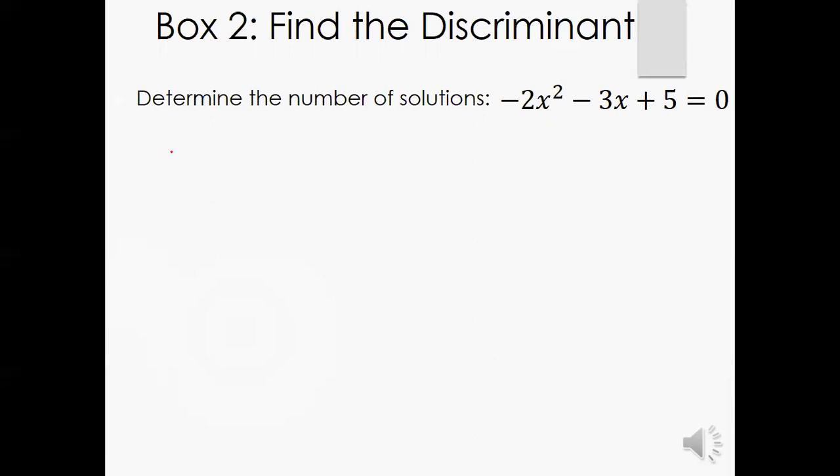And remember your discriminant is just the b squared minus 4ac. That's all you're focused on here. Here's my a, here's my b, here's my c. I'm going to plug them in. We have negative three squared minus four times negative two times five.